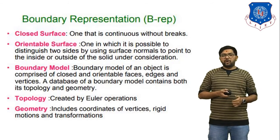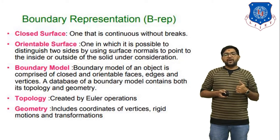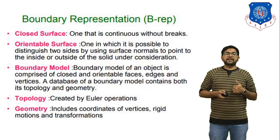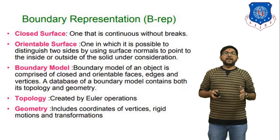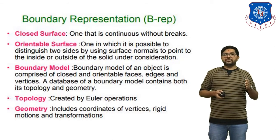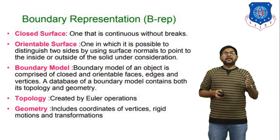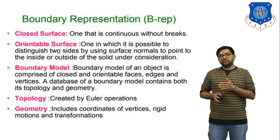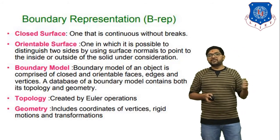Next is the boundary model. A boundary model of an object is comprised of closed and orientable faces, edges, and vertices. In boundary representation, we combine any body with a number of faces, number of edges, and number of vertices. Next is topology, which we already discussed in the first lecture of this chapter, created by Euler operations. And next is geometry, which includes coordinates of vertices, rigid motion, and transformation.